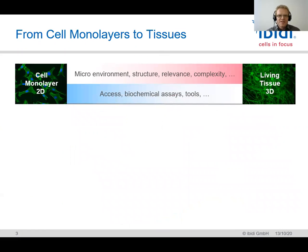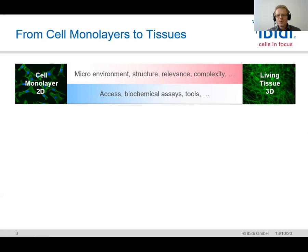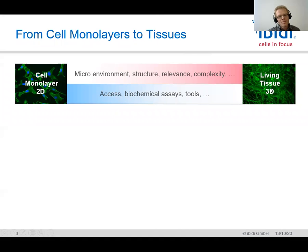As a quick introduction here: going from a typical two-dimensional cell monolayer towards living tissue in 3D is quite a long step. But a lot of people want to do more physiologically relevant experiments — they want more microenvironment resembling living tissues, more cell types, more structure, more relevance, and of course more complexity in the assays.